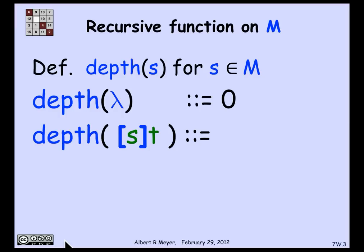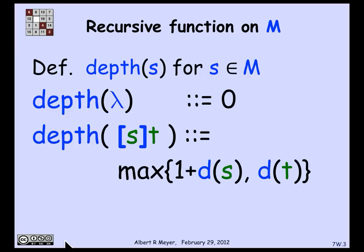Putting brackets around s gives you a string that's one deeper than s. Then you follow it by t, and it's as deep as t is. So the depth of the constructor is equal to the max of 1 plus depth of s and depth of t. And that's our recursive definition of depth.